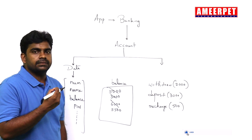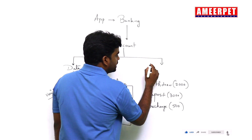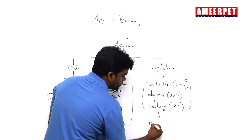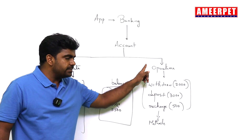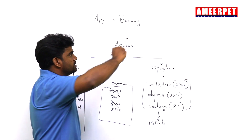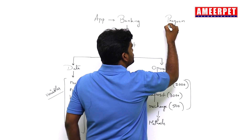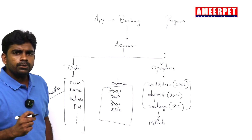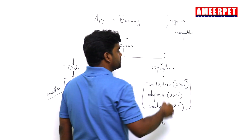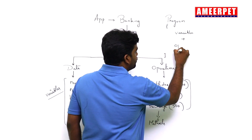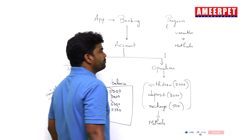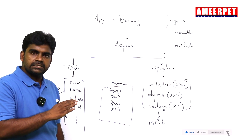The data always changes when you perform operations on it. Technically, these operations are called methods. Every program consists of only two things: variables and methods. Variables are used to store the information, and methods are used to perform operations on the data.